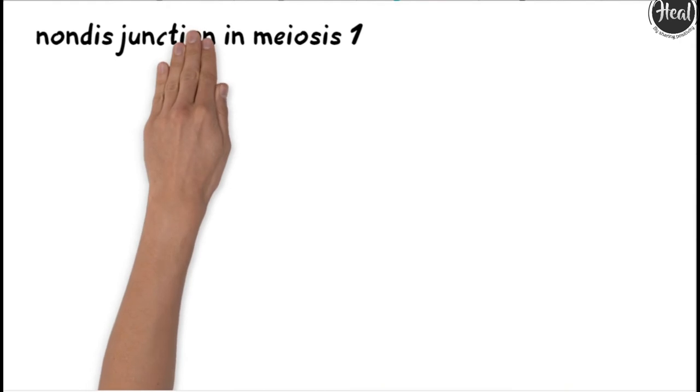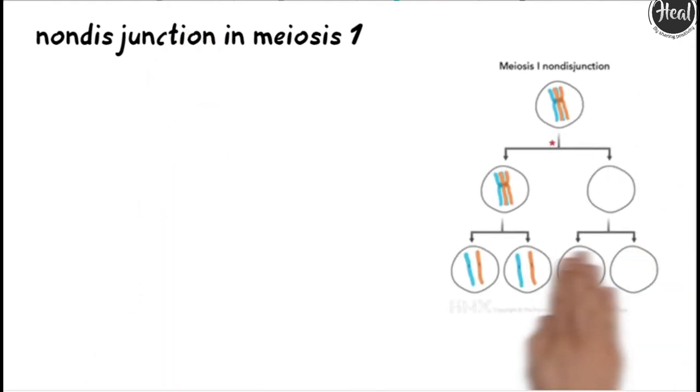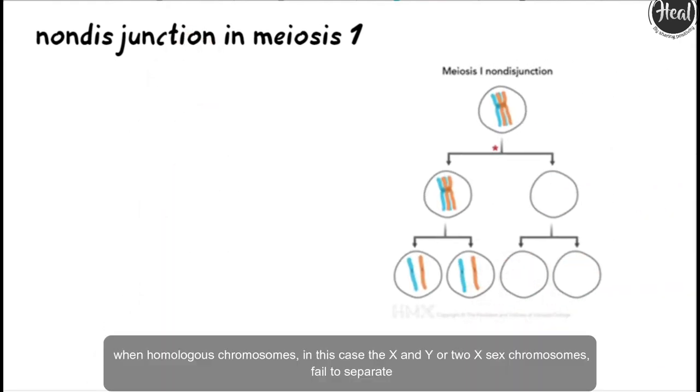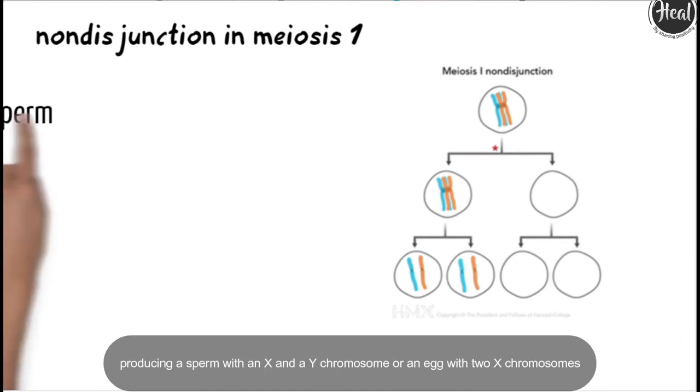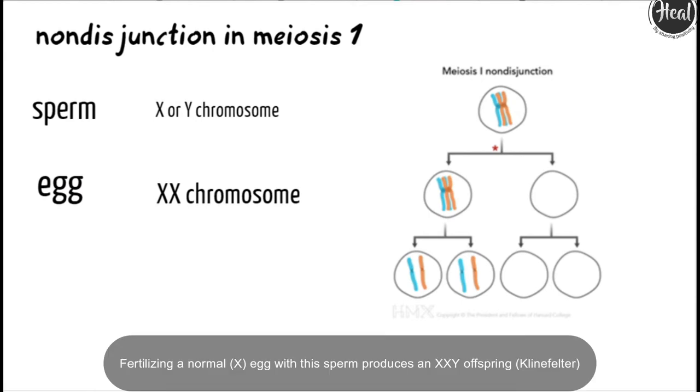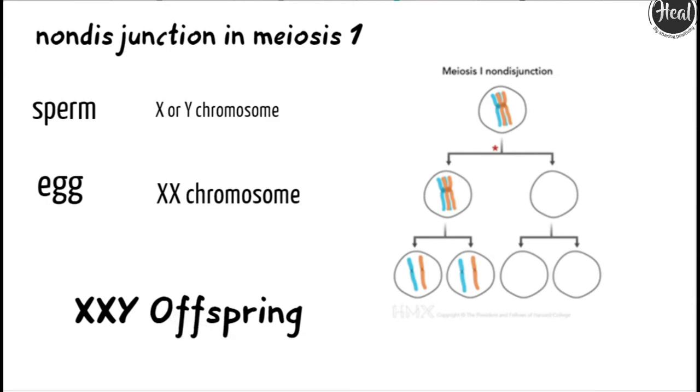The relevant nondisjunction in meiosis 1 occurs when homologous chromosomes fail to separate, producing a sperm with an X and a Y chromosome or an egg with two X chromosomes. Fertilizing a normal X egg with the sperm produces an XXY offspring, which is Klinefelter condition.